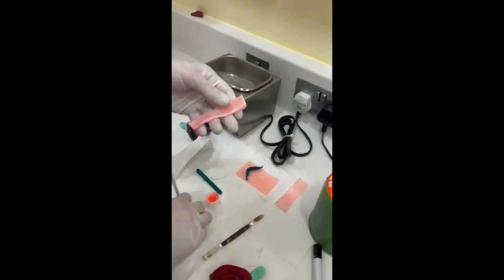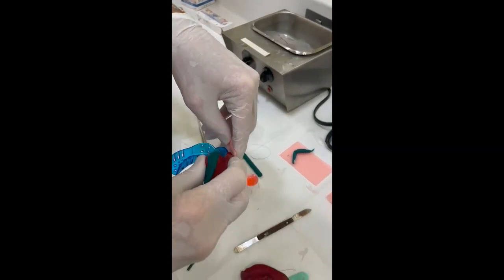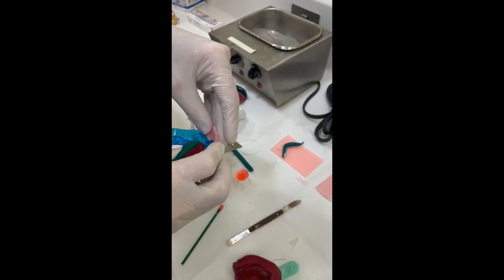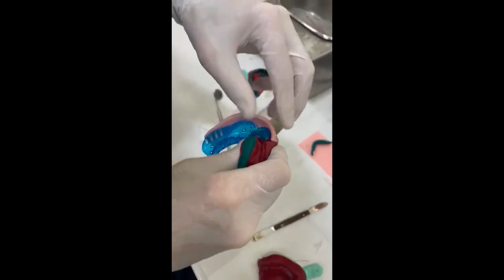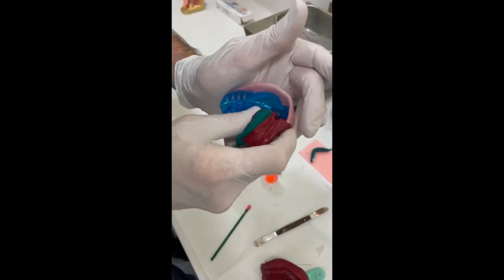You add it to the outside of the tray, not the inside. So where the compound stops, the wax starts. And you come round. So you're trying to create basically a special tray from a stock tray.